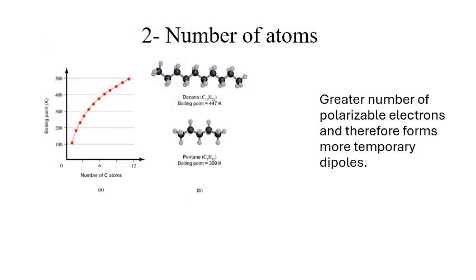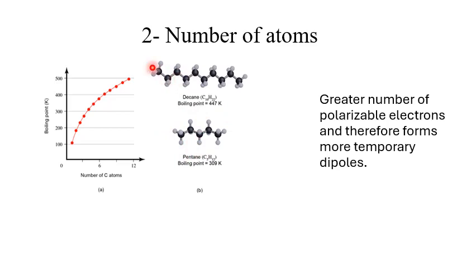The second factor that affects LDF is the number of atoms. For example, with hydrocarbons: decane contains more carbon and hydrogen atoms, and therefore a greater number of polarizable electrons, so it forms more temporary dipoles and has a higher boiling point than pentane, which has fewer carbon and hydrogen atoms. Pentane has fewer polarizable electrons and cannot form as many temporary dipoles as decane, so its boiling point is lower. More polarizable electrons means stronger LDF, stronger IMF, and higher boiling point.